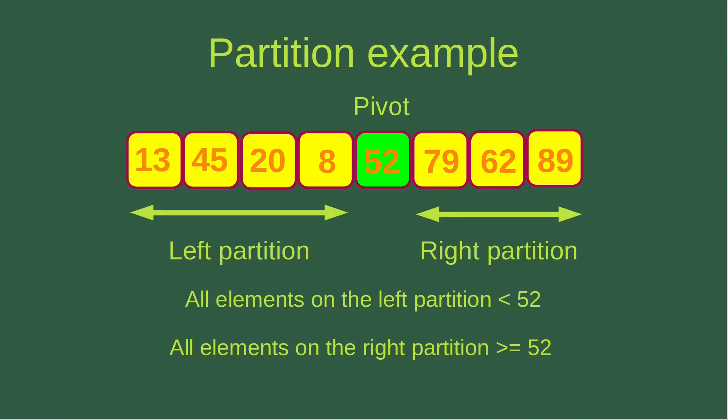Now let's take a look at a partition example. This shows a situation with the pivot in the correct position. So 52 is the smallest element in the given array and is already in the correct position. The left partition contains numbers smaller than 52, while the right partition contains numbers larger than 52, so the partition is set up correctly.